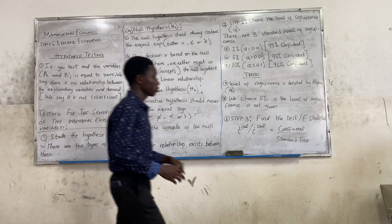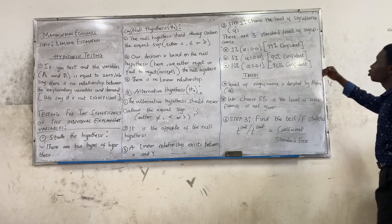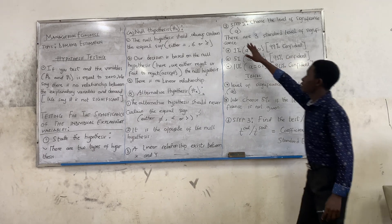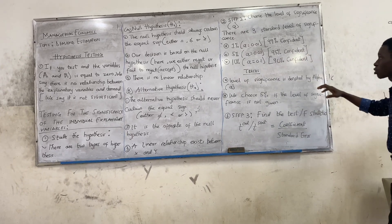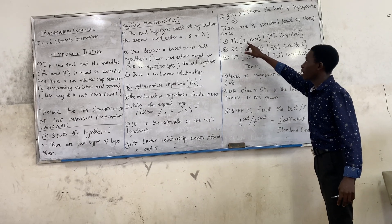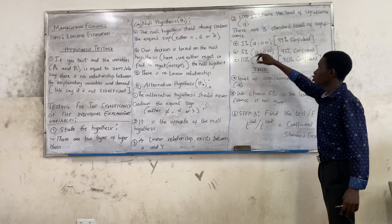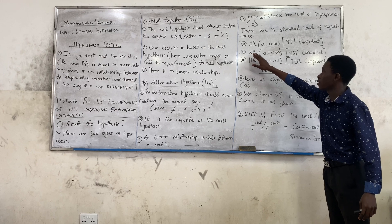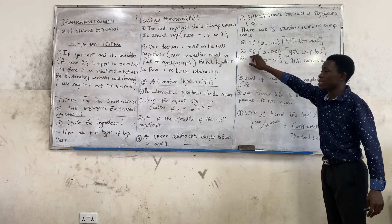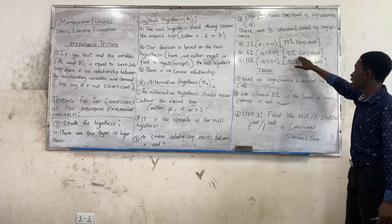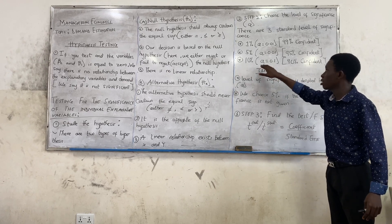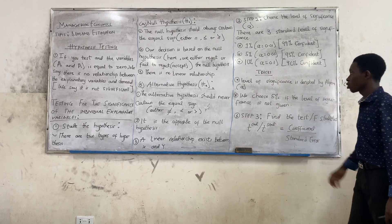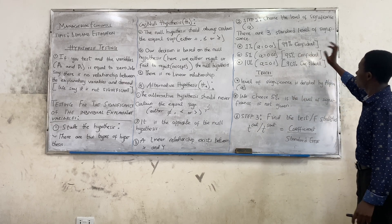Step two: choose the level of significance. The level of significance is denoted by alpha. There are three standard levels of significance. If it's 1%, alpha is 0.01 — we are 99% confident. If it's 5%, alpha is 0.05 — we are 95% confident. If it's 10%, alpha is 0.1 — meaning 90% confident.